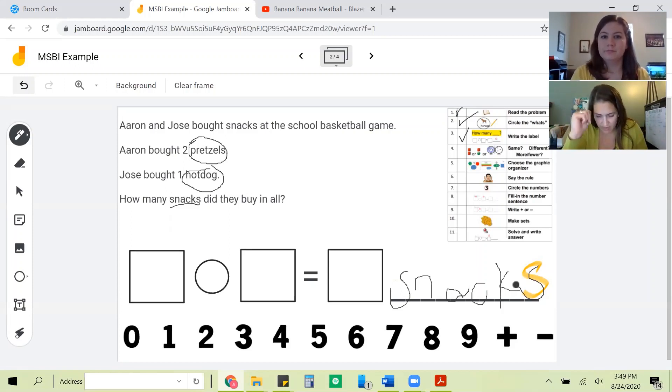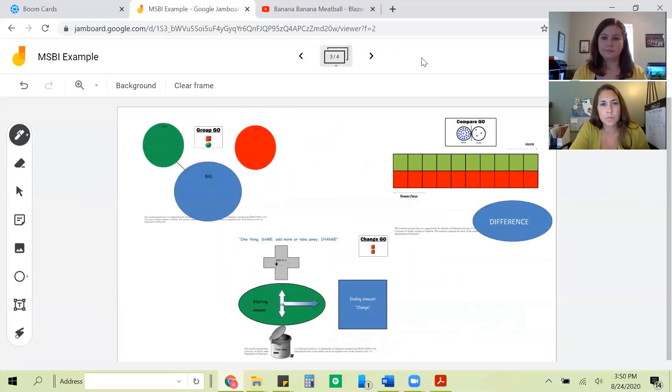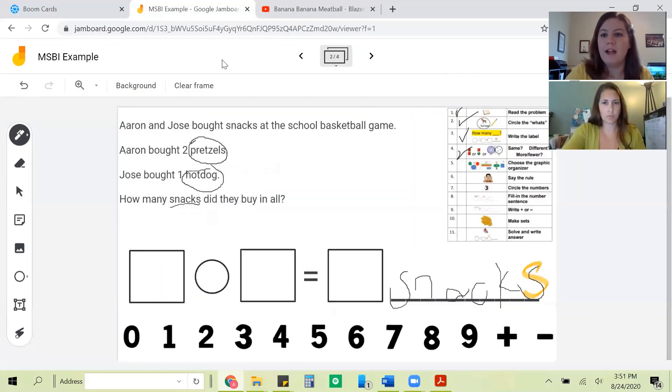Number four. Same, different, more, or fewer. What type of problem do we have? Are pretzels and hot dogs same or different? Different. Different. Great job, Melissa. What comes next? Choose the graphic organizer. Which graphic organizer do we use for different? Group? You got it. Circle group. Nice job, Melissa. Mark off number five on your task analysis.